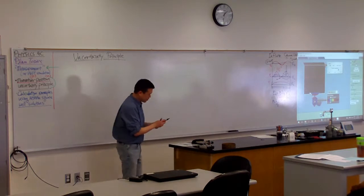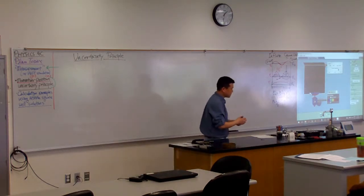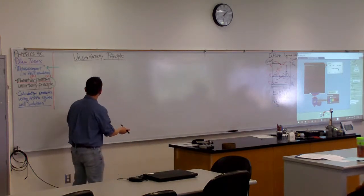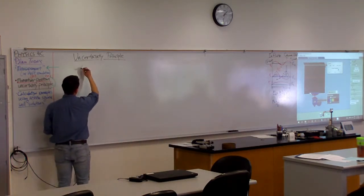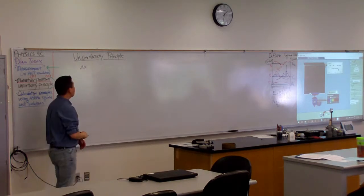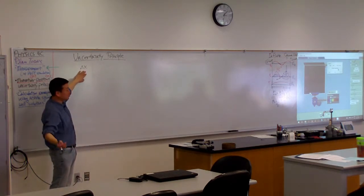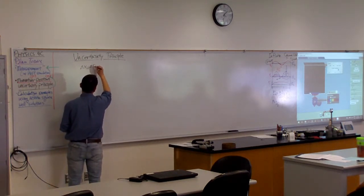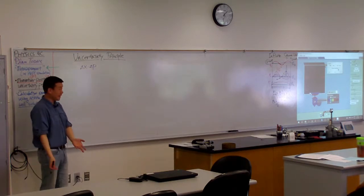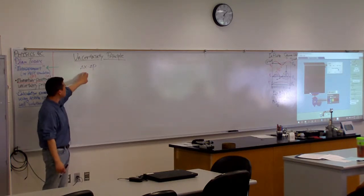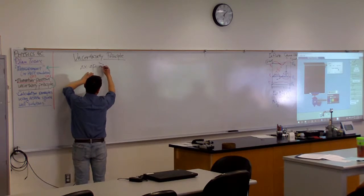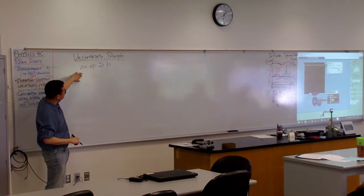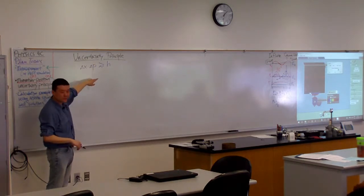And the approximate version you might have seen is something like this. Let me write it down so that you can at least recognize the form. It says that if you have uncertainty measuring position and that's going to be associated with the related uncertainty in measuring momentum of the same particle at the same moment in time, then this uncertainty must be greater than or equal to roughly Planck's constant. So in case you see this in a textbook, sure, that's close enough. It's not wrong.